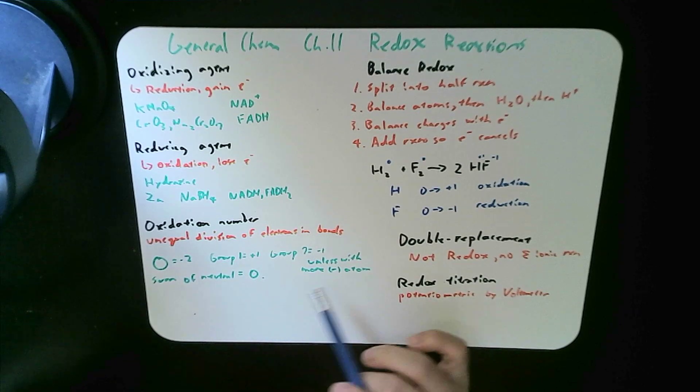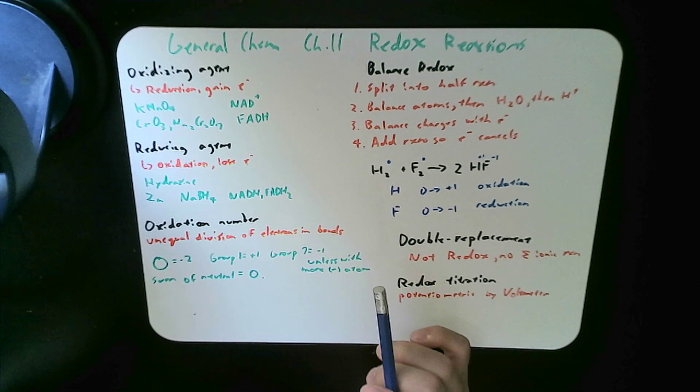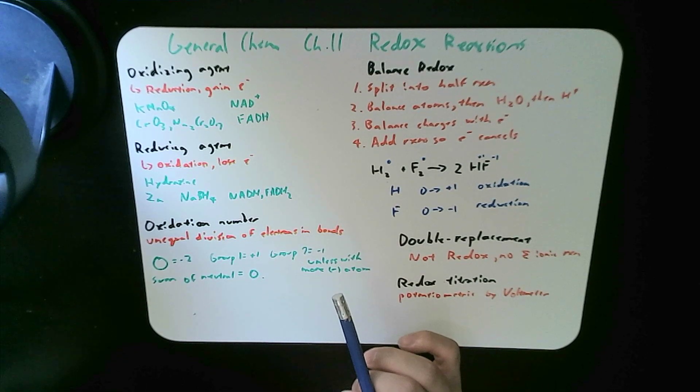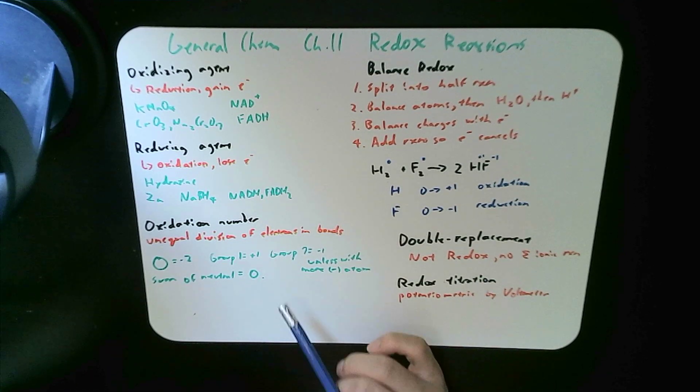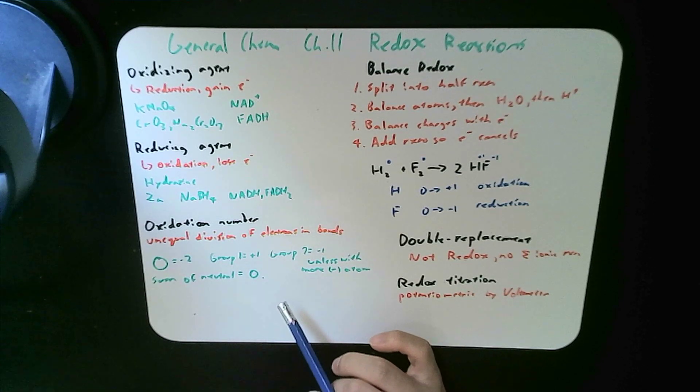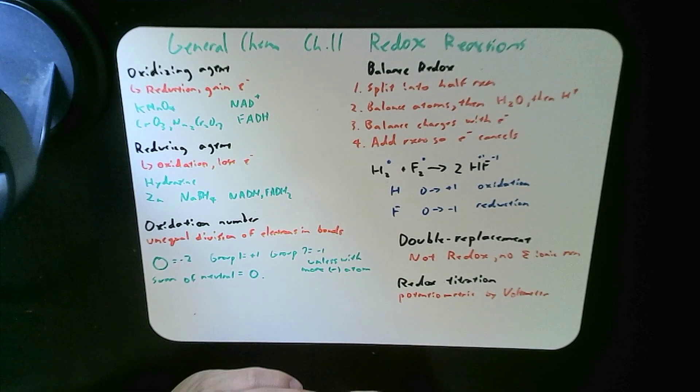CH4, for instance, hydrogen is always said to be plus 1, unless there's a more electropositive one with it. So in CH4, all the H's are positive, and C is designated as negative 4.